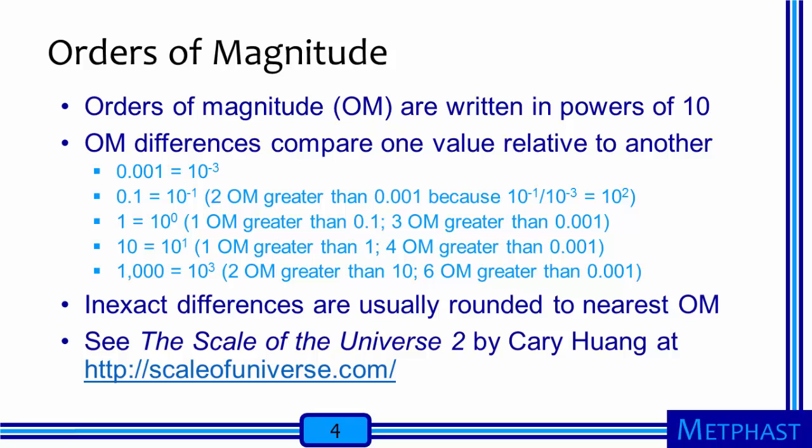Our last example is 1000, which is ten to the third power, so it is two orders of magnitude greater than ten and six orders of magnitude greater than 0.001. Orders of magnitude are important in nanotechnology because we are talking about dimensions that vary by many powers of ten. When we talk about dimensions that do not differ by an exact power of ten, we can round to the nearest order of magnitude. For instance, if the ratio between two numbers is 2.3 times ten to the fourth power, we say they differ by approximately four orders of magnitude.